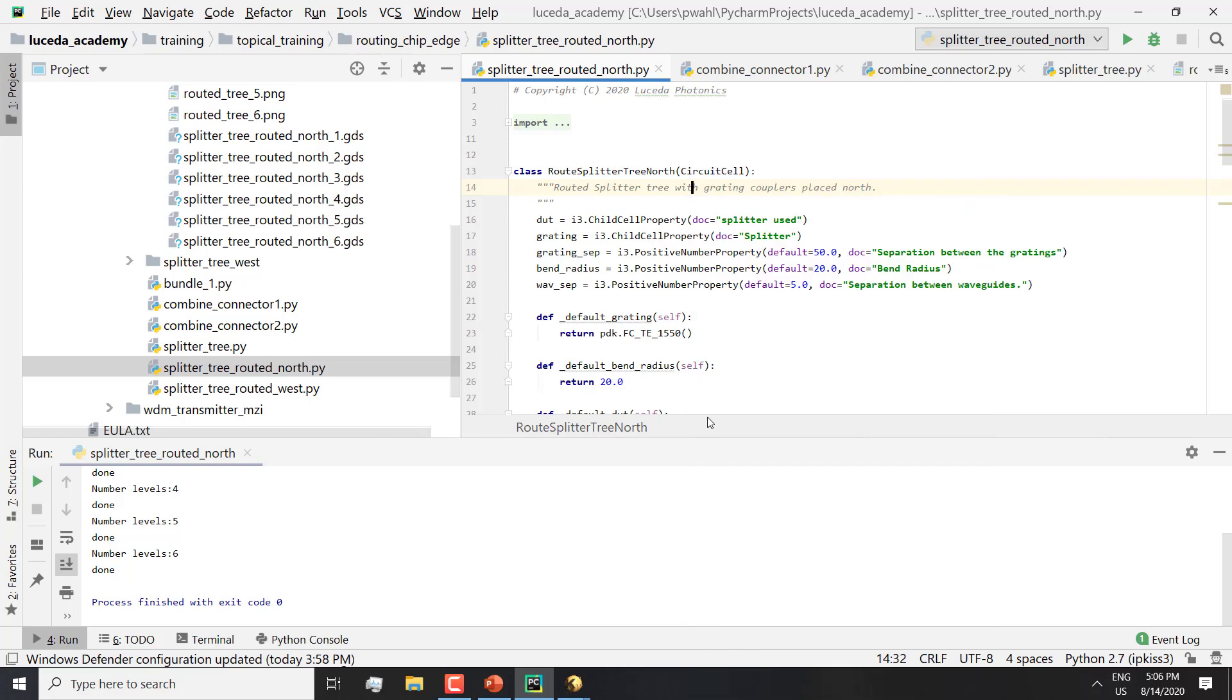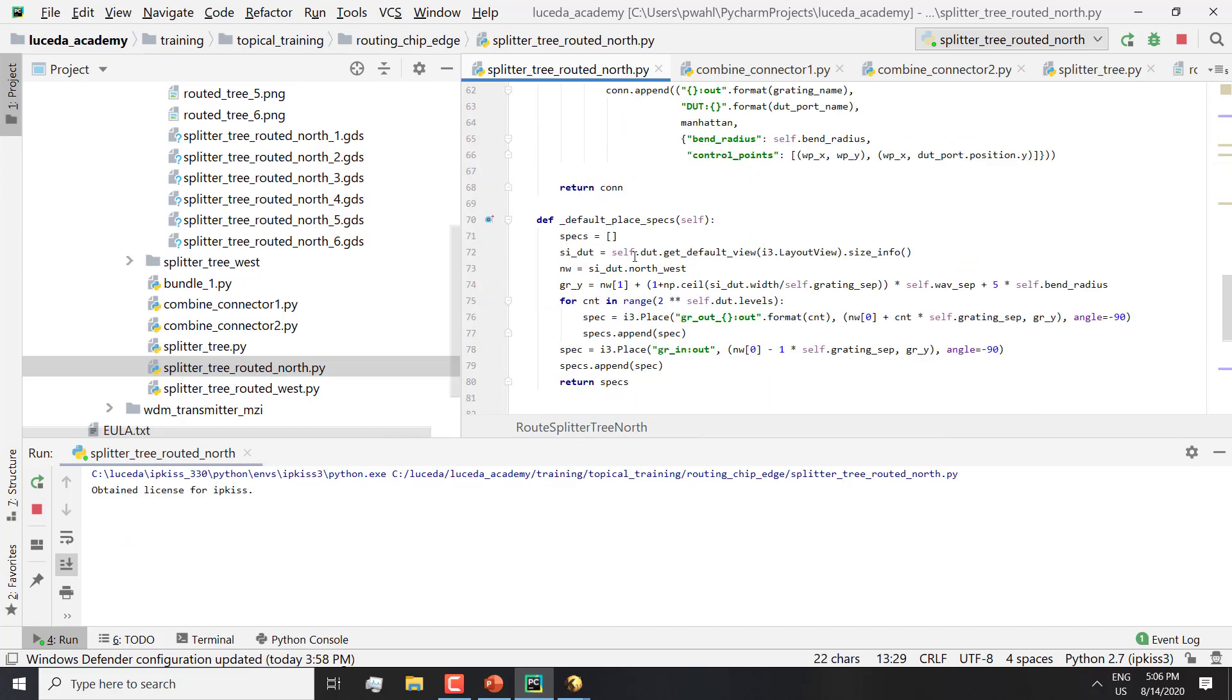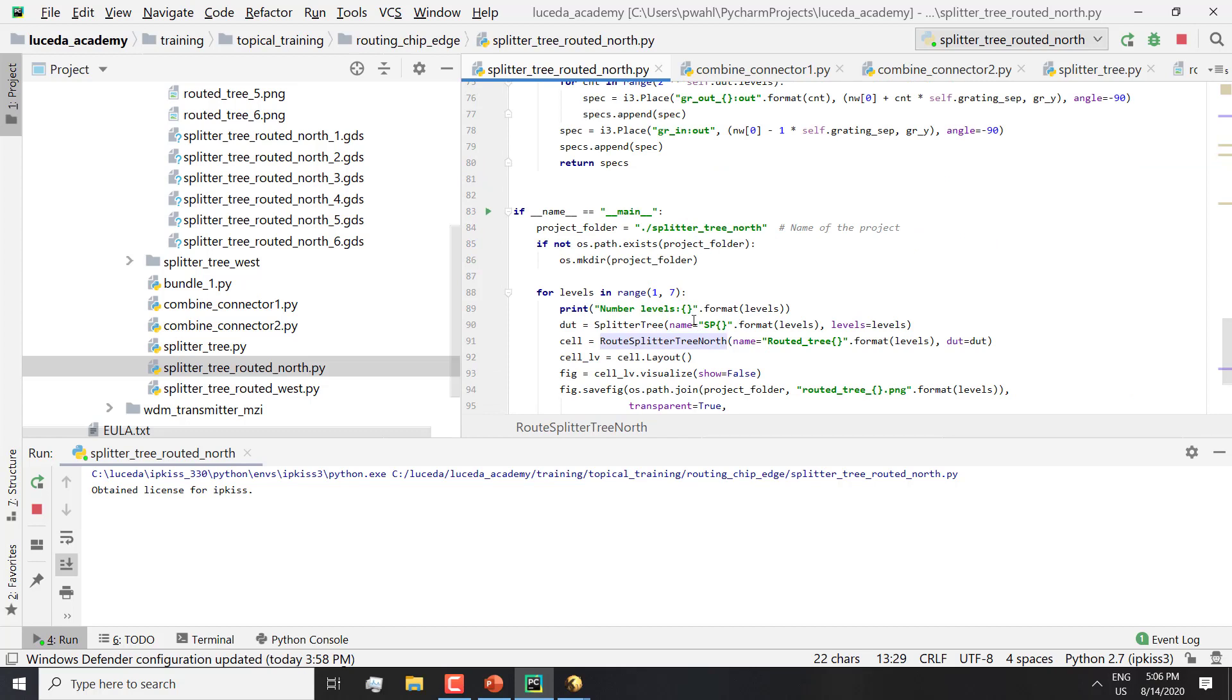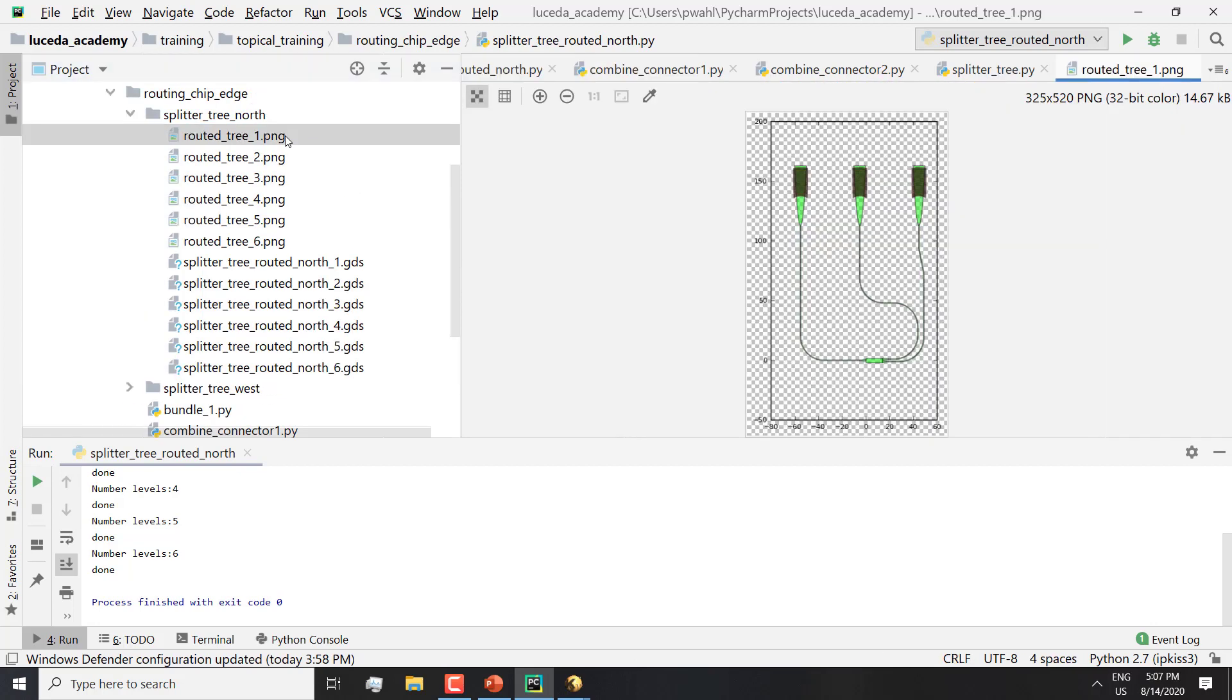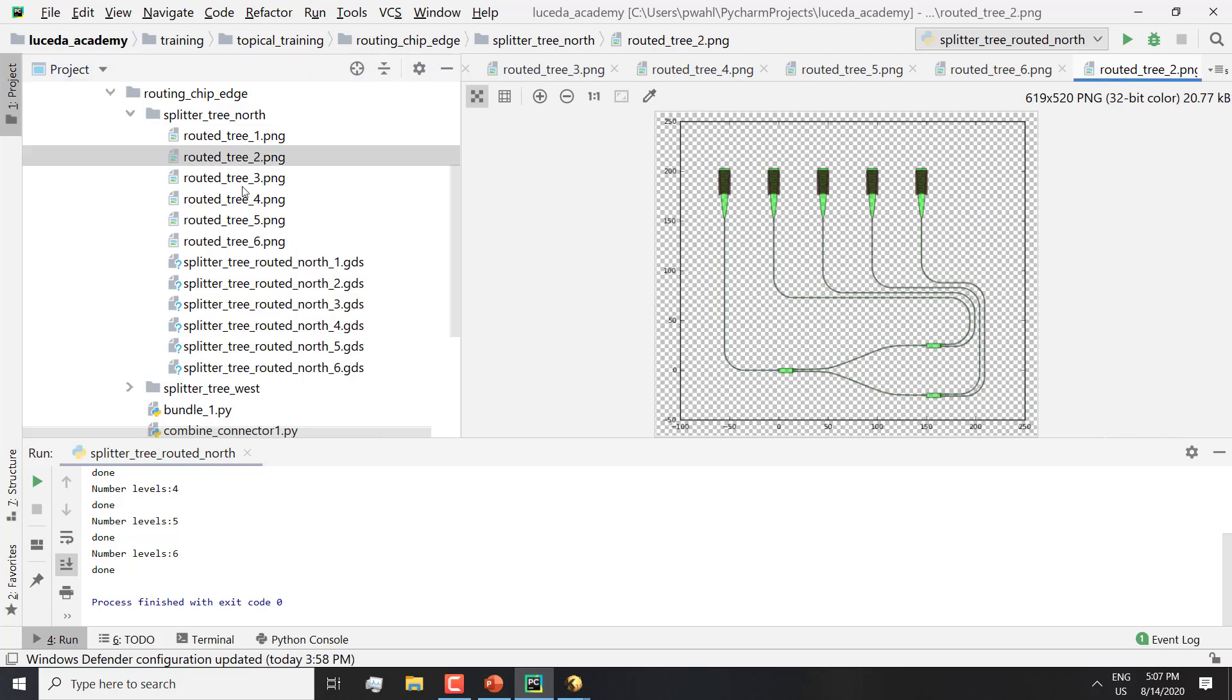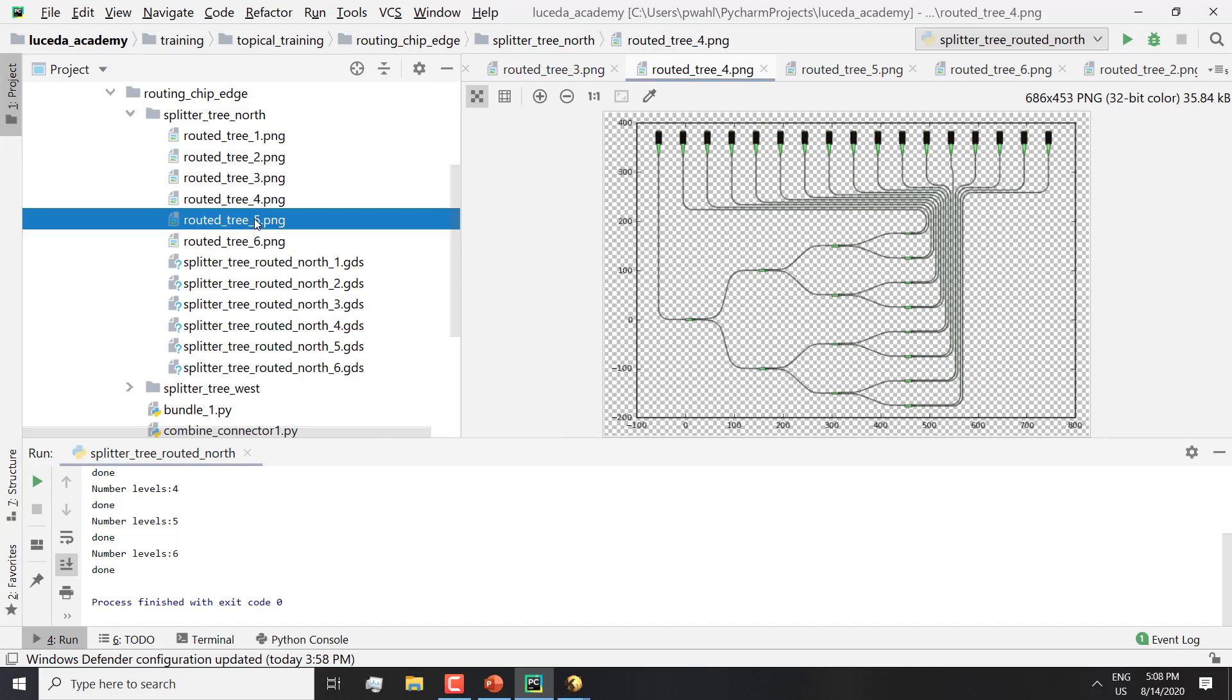So if I run this code, a class called RoutedSplitterTreeNorth will be called six times for a varied number of levels in a splitter tree and print it to GDS. With just one component that's routed to the north, two, three, four, five, and six.